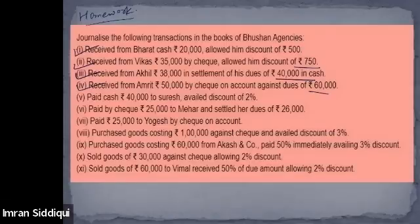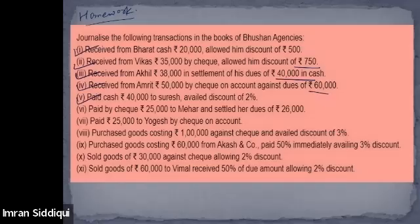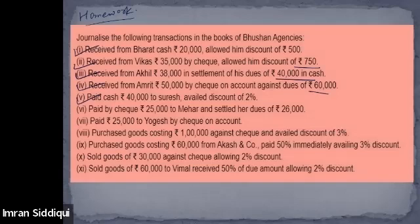Fifth transaction: paid cash 40,000 to Suresh, availing a discount of two percent. Vanisha provides an entry but it is not correct. The general entry should be: Suresh account debited by 40,000, to cash account 39,200, and to discount received account.